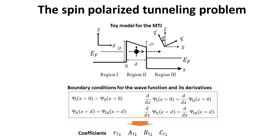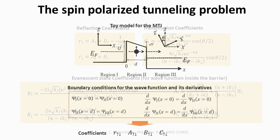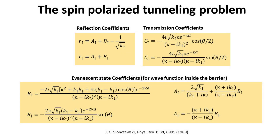From complete knowledge of the full transmitted wave function, the tunneling current passing through the MTJ can be calculated. We list all the coefficients after solving the boundary conditions — they can be expressed in terms of the wave vectors of both spin configurations in the electrodes and in the tunneling barrier, as well as the magnetization misalignment angle and the tunneling barrier thickness. These coefficients were first derived by Slonczewski in his seminal 1989 paper, which we leave here as a reference.